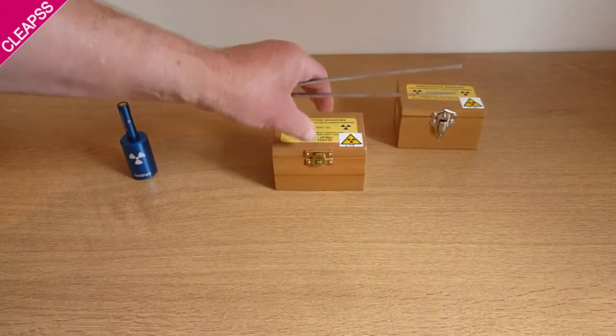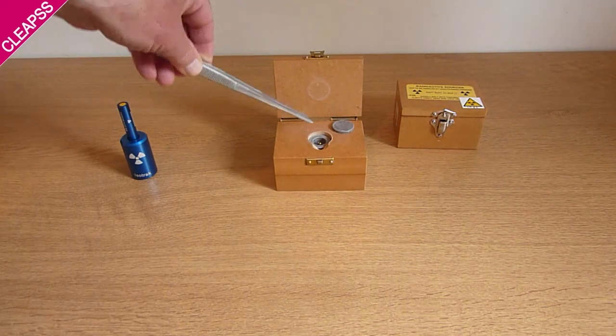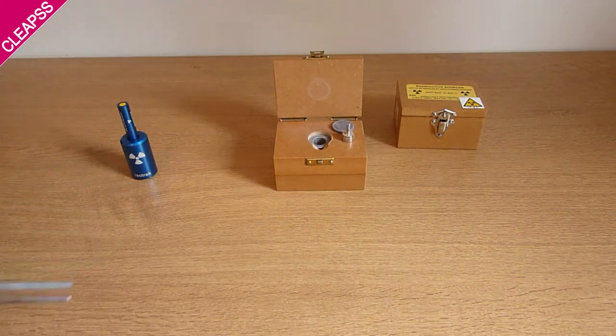So there's the strontium-90 source used for demonstrating beta emissions, exactly the same design. These designs have been the same since the 1960s.